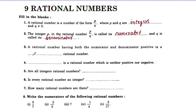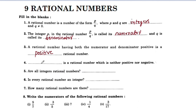Next question: a rational number having both the numerator and denominator positive is a positive rational number. A rational number which is neither positive nor negative is zero. Zero is neither positive nor negative.